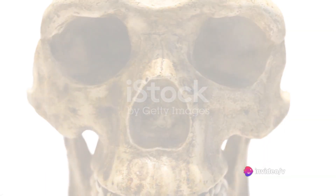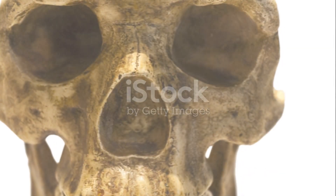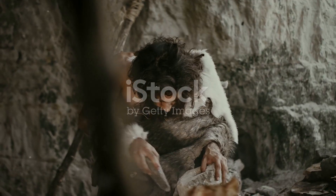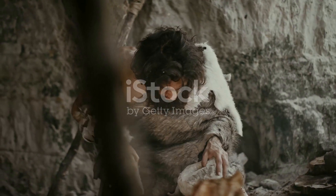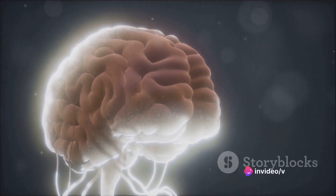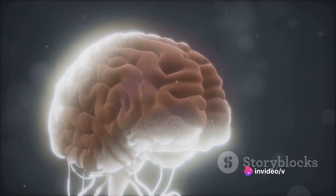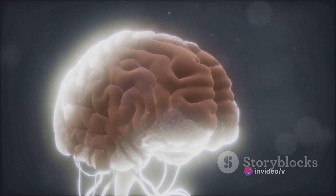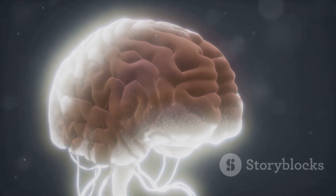Then came the genus Homo, around 2.5 million years ago. The Homo habilis, often referred to as handyman, was the first to make stone tools. The brain size of Homo habilis was larger than that of Australopithecus, signaling the start of a trend towards larger brains in human evolution.